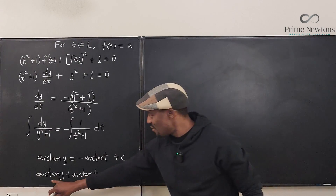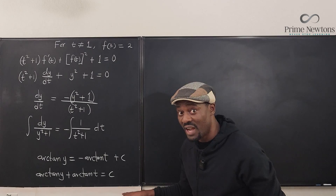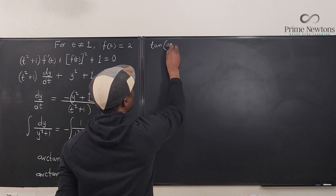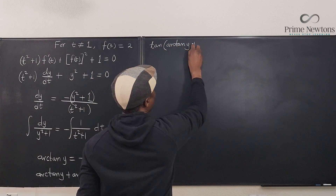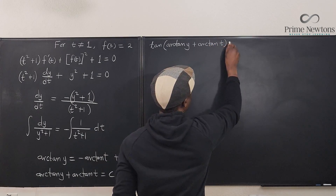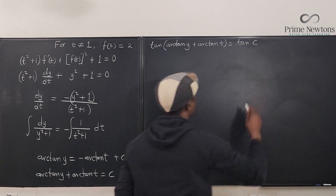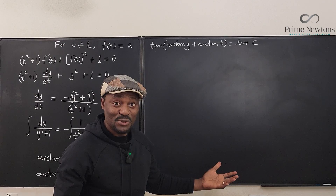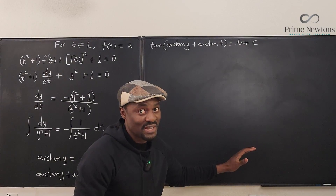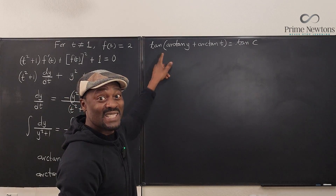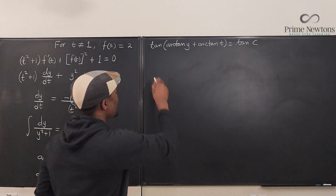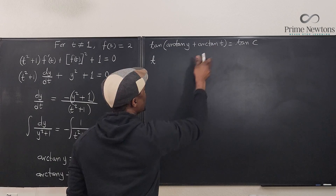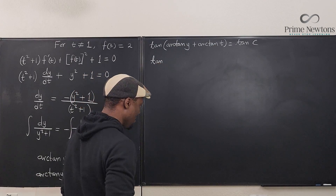To get rid of the arctangents, we take the tangent of both sides: tan(arctan(y) + arctan(t)) = tan(C). You cannot distribute the tangent — remember sine(a + b) ≠ sine(a) + sine(b). We need the addition formula. Let's write it: tan(a + b) = (tan a + tan b) / (1 − tan a · tan b).